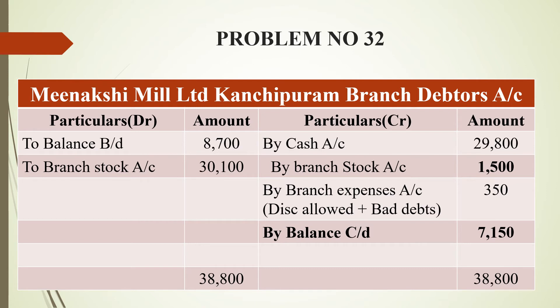By branch expenses account — discount allowed plus bad debts — Rs. 350. After totalling the credit side, we get a balancing figure of Rs. 7,150 as closing debtors. The grand total is Rs. 38,800 on both sides.